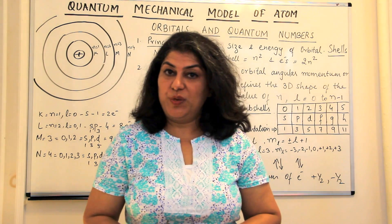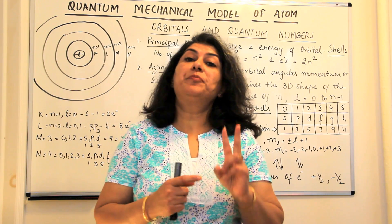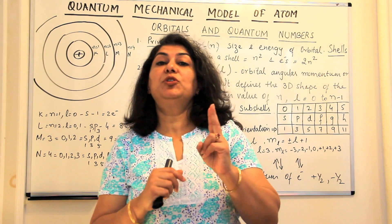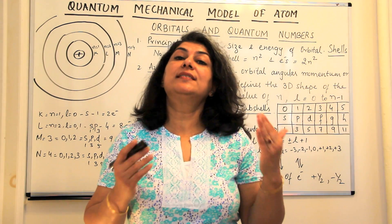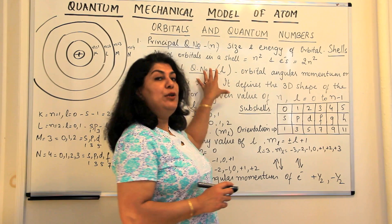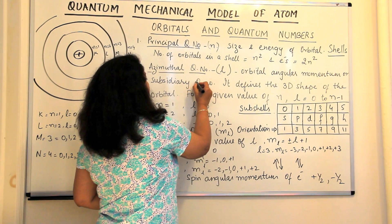In the previous video, I taught you about the first two quantum numbers, the principal quantum number n which tells us about the shell and the azimuthal quantum number l which tells us about the subshell. Then I told you that from the value of n it is possible to calculate the value of l.